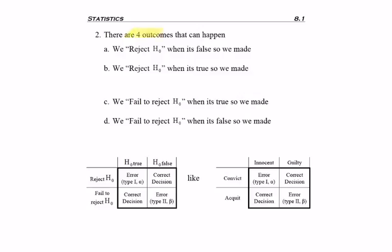And so there are four things that can happen when we go to reject or fail to reject H0. The first thing is we might reject H0 when it was false. And if we reject it when it was wrong, then we made a correct decision.